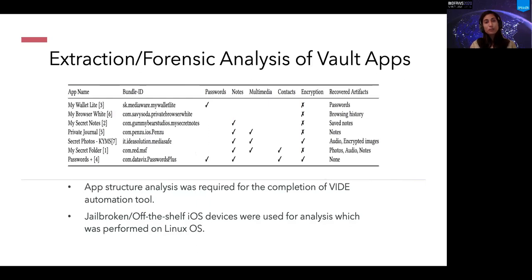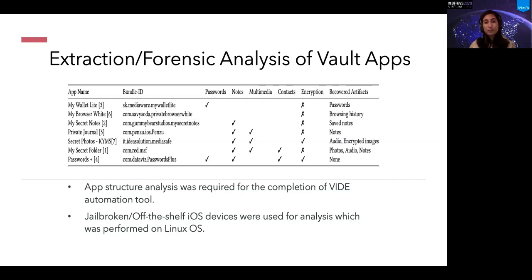Here is the list of forensic analyses performed. We looked at close to eight applications which we downloaded, installed, and sometimes subscribed to, choosing different kinds of mobile applications. Some were password protected, some synced content to the cloud, some stored notes and secret passwords, some hid multimedia like photos and videos, and a few used encryption — though many did not. Recovered artifacts ranged from passwords to browsing history, saved notes, audio, encrypted images, photos, and several other files. App structure analysis was required for completion of the VIDA automation tool.